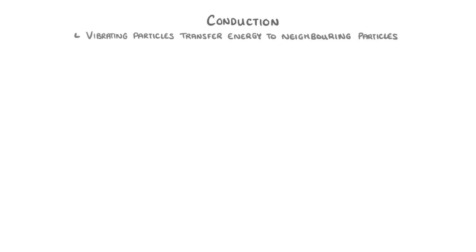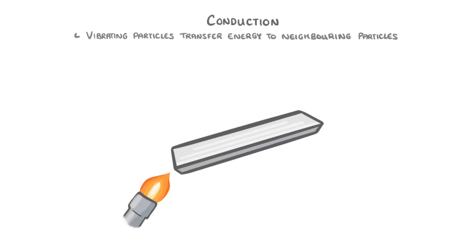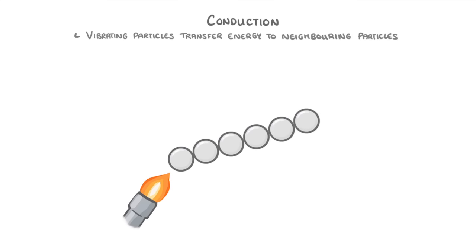Let's start with conduction. The key idea behind conduction is that vibrating particles transfer energy to neighbouring particles. To understand how this works, let's imagine that you are heating one end of a piece of metal with a Bunsen burner, and imagine the piece of metal as a series of particles.